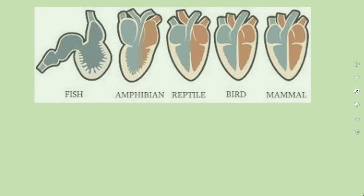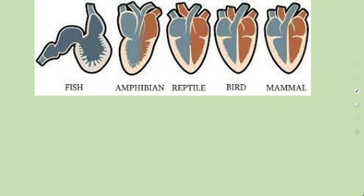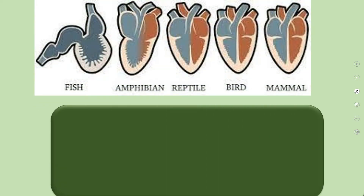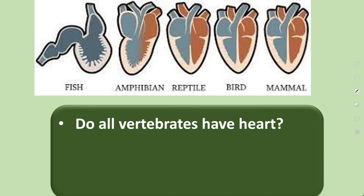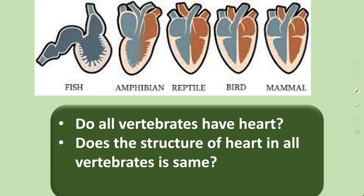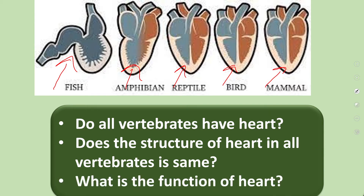For our activity, look at these different types of hearts and tell me: do all vertebrates have a heart? Yes, almost all vertebrates have a heart. Does the structure of the heart look the same in all vertebrates? Here you can see the heart of a fish, amphibian, frog, reptiles like lizards, birds, and mammals like human beings — all have different hearts.